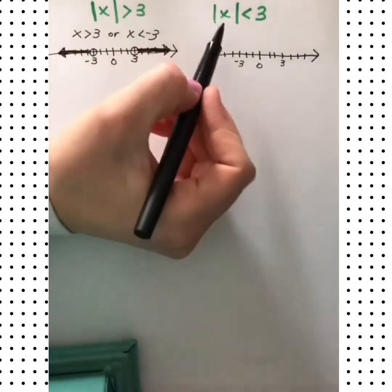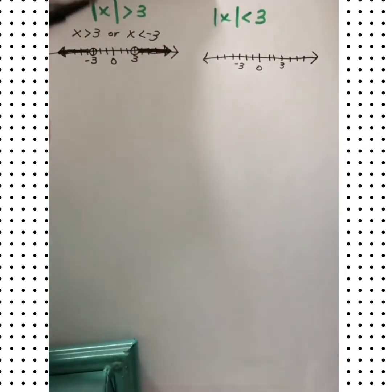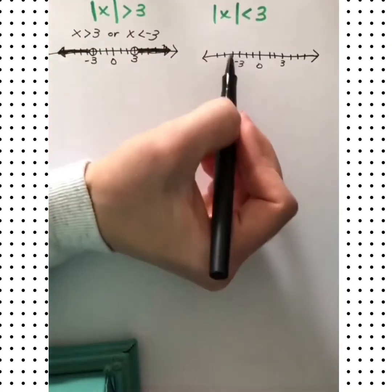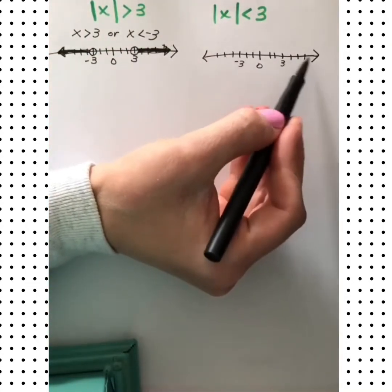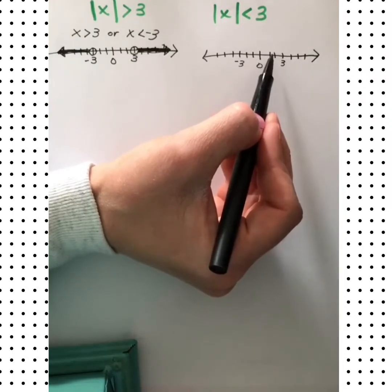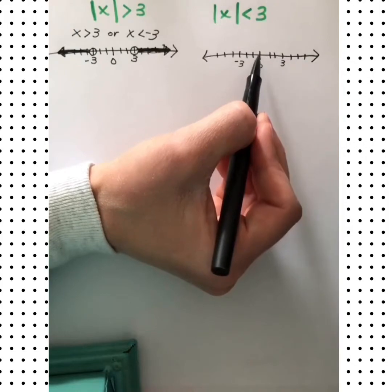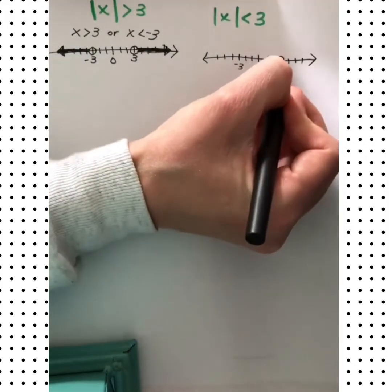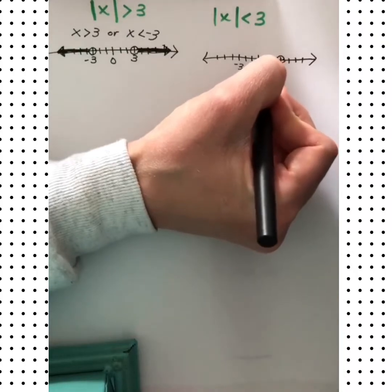Let's take a look at this one: the absolute value of x is less than 3. What numbers work for this? Well, obviously these greater numbers won't work. Will 2 work? Yeah. 0? Yep. So we can start shading this way, but where do we stop?